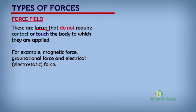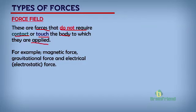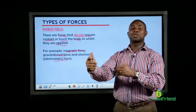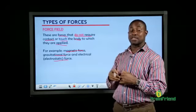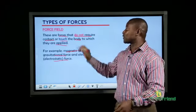Force field — in this type of force, there is no need for contact or touch of the body to which they are applied. Meaning, without coming in contact with the object, it can feel such a force. An example is magnetic force, gravitational force, and electrical or electrostatic force. Let's use the magnet as an example: when you keep a piece of iron metal close to a magnet, without the magnet coming in contact with the piece of metal, it will attract it to itself. There is just a force field around the magnet which attracts the piece of iron material to itself.